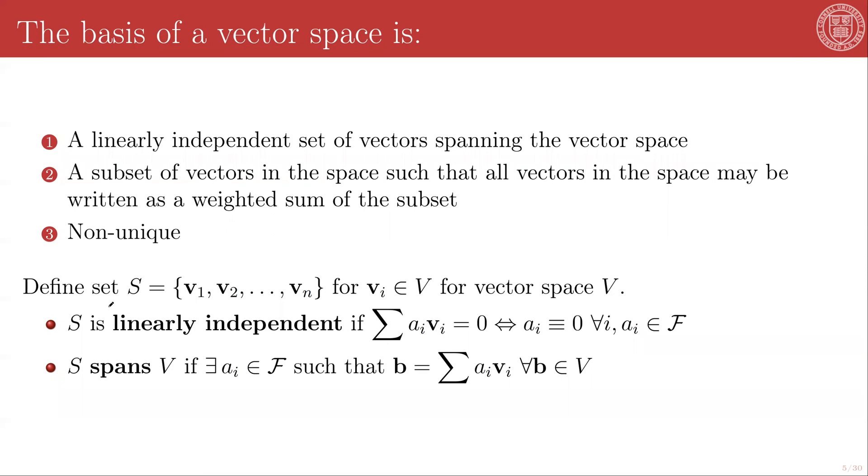So to fill in the mathematical formalism, let's define a set S that has a bunch of vectors in it, V_i through V_n, where all of these belong to a vector space V. I can say that S is linearly independent if the weighted summation of those vectors V_i is equal to zero if and only if every one of those weights is zero, where the weights are members of the field that the vector space is defined over.